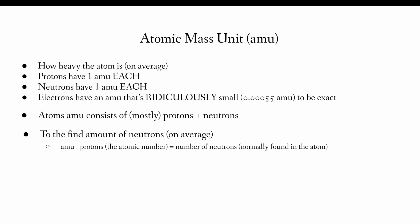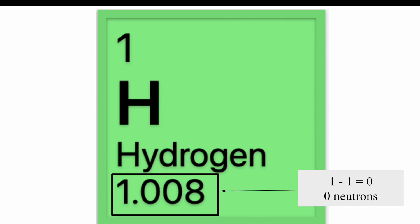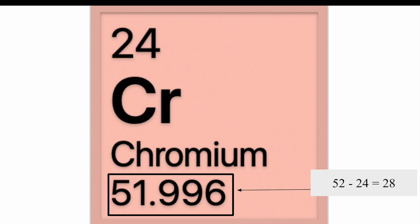Atoms amu consists of mostly protons plus neutrons. To find the amount of neutrons on average, basically what you do is subtract the atom's amu from the amount of protons, which is the atomic number, and you get the number of neutrons, which is normally found in the atom. Hydrogen has one amu on average and one minus one is zero. So hydrogen typically has zero neutrons. Let's do another one.